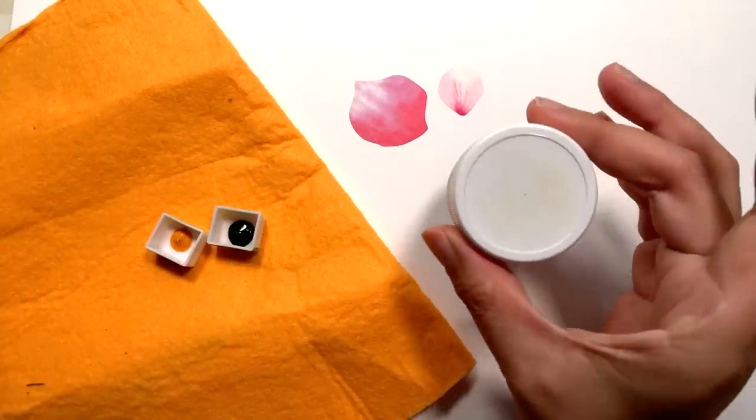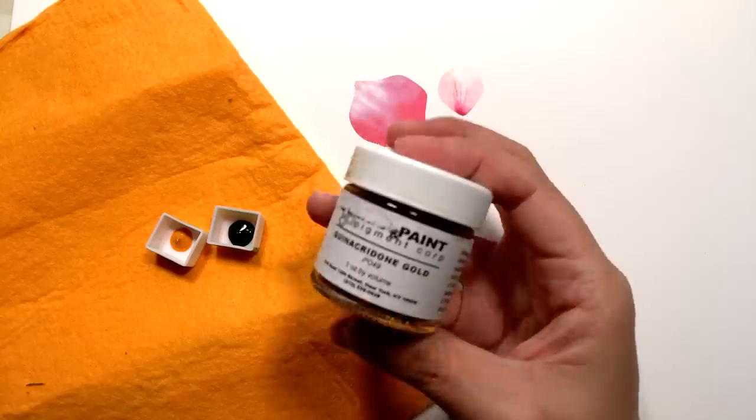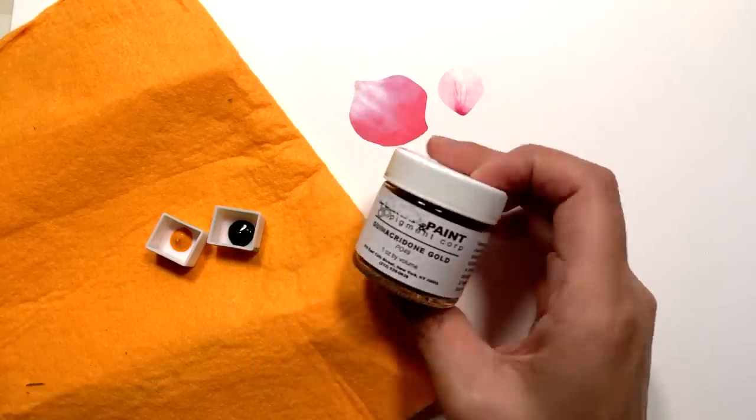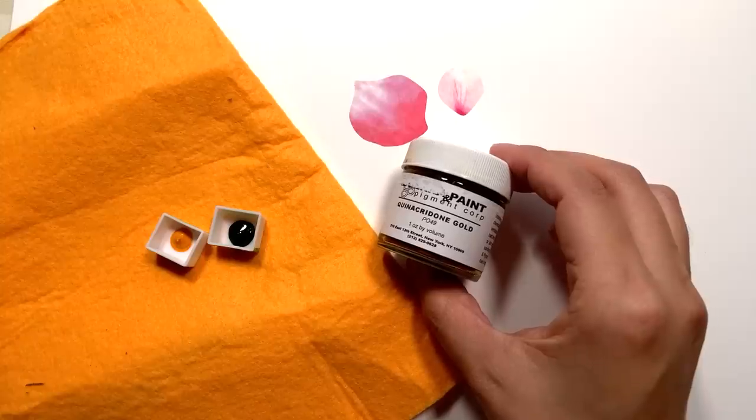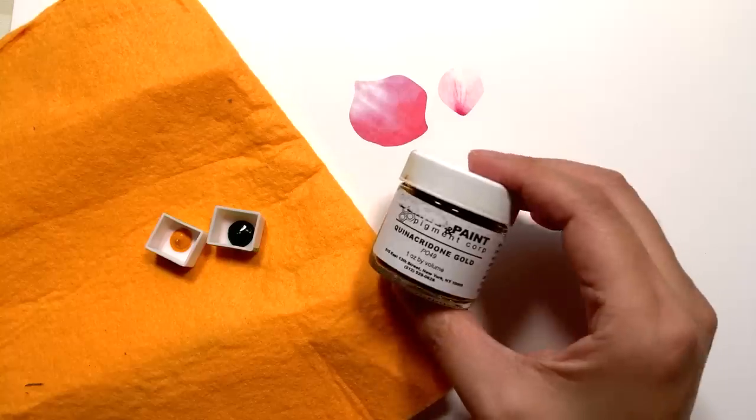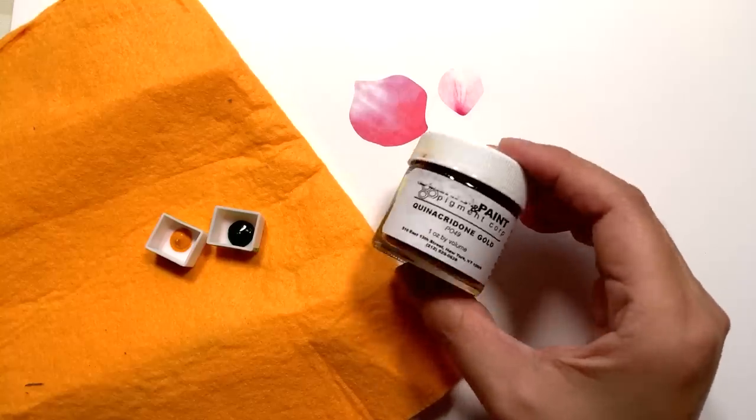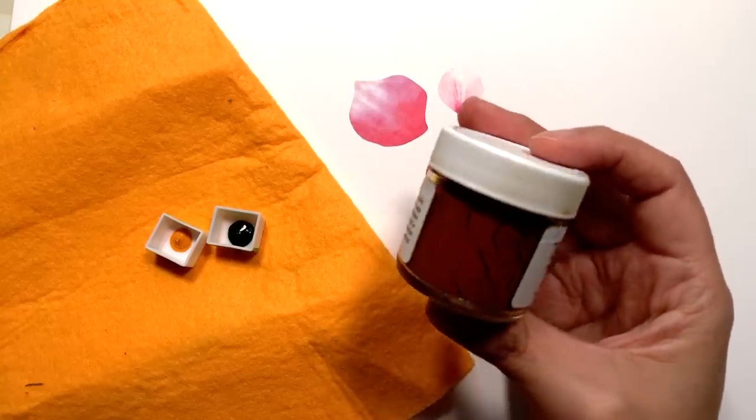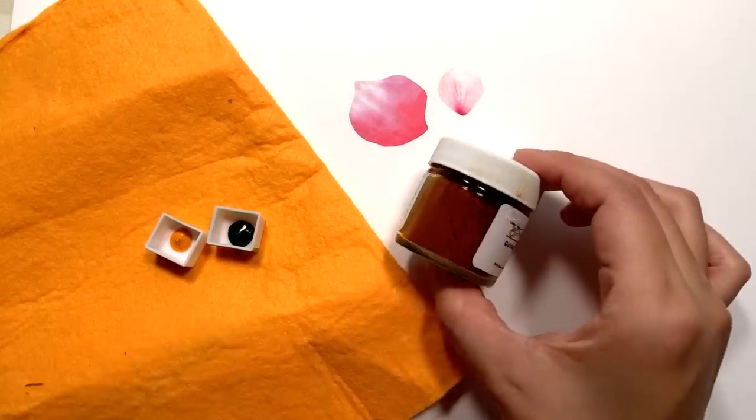And then this is the magical jar, I'm going to call it. It is a jar of the Quinacridone Gold PO49, the genuine article. I'll leave a link down below to where you can get this. And so I'm going to make a video of making this into a paint.